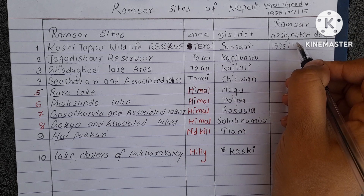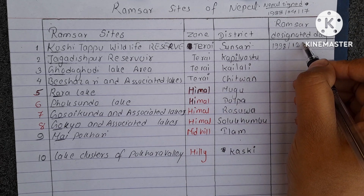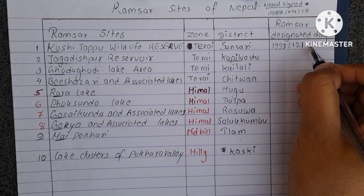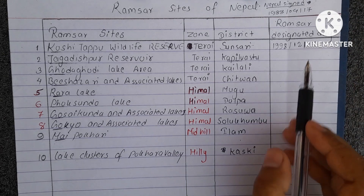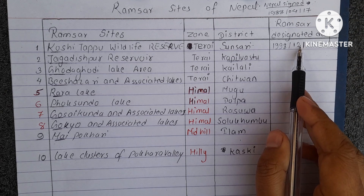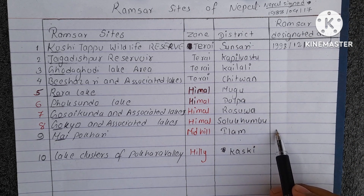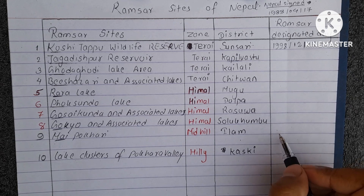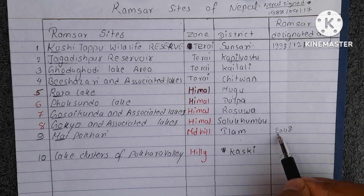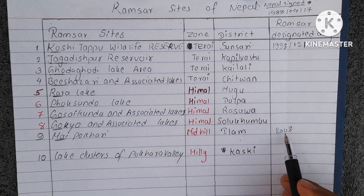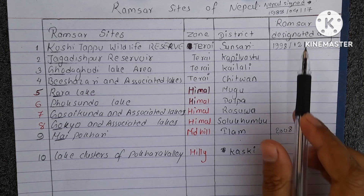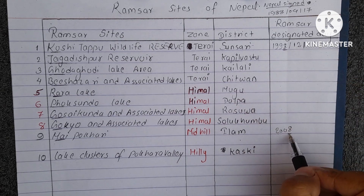Now for remembering the designation dates, here is a trick. The numbers 12 and 17 follow a pattern. For Mai Pokhari, the year is 2008. To remember 2008: start with 2000, then the number 8 appears — copy the 8. Similarly, adding 10 to numbers helps derive related dates. For instance, 12 added gives 11, and 17 added gives 27.